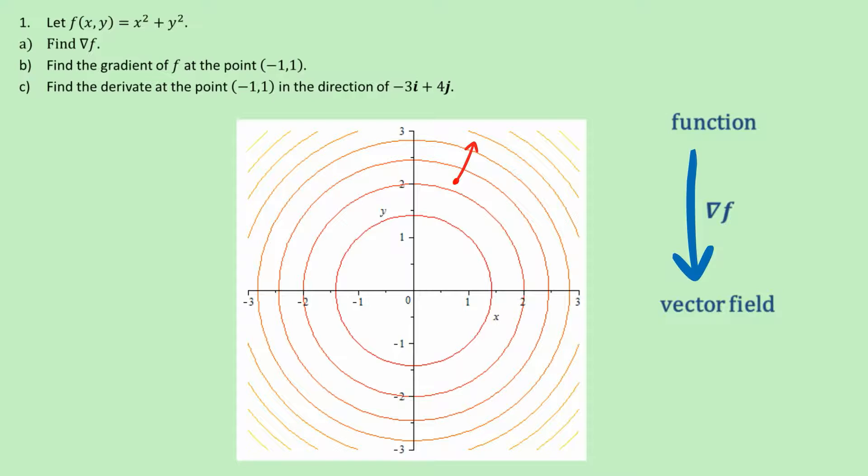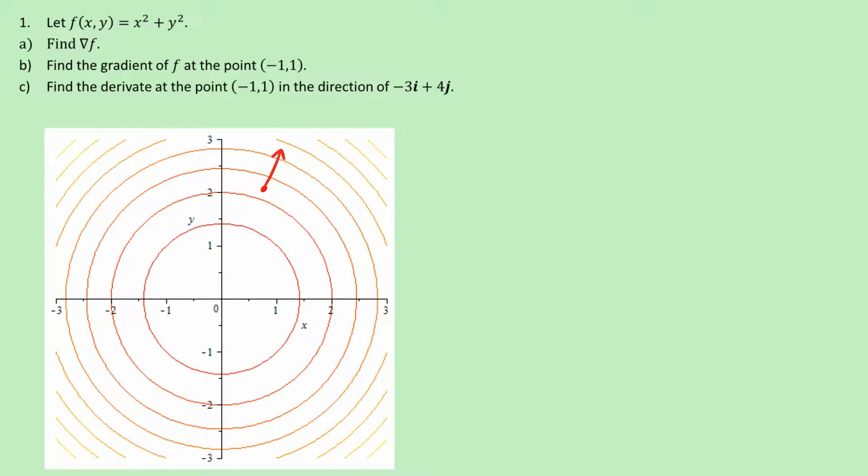The next thing is the length of the vector, and the length of the vector is equal to the slope at that point heading in that direction. So that's what grad f is.